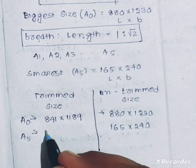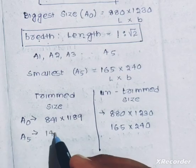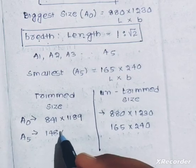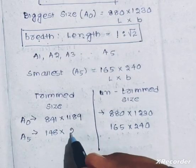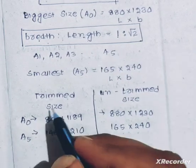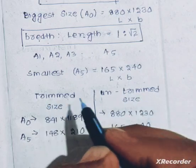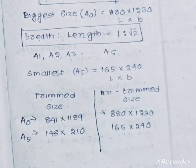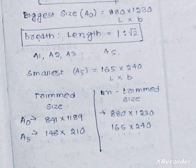The trim size is 140 mm x 210 mm. We put on trim size, which is the point of the trim size of the drawing sheet.